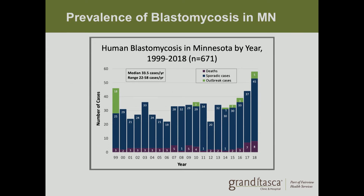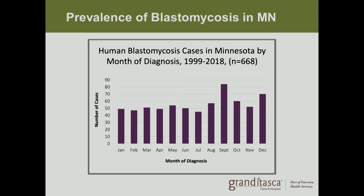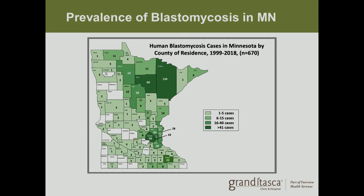As you can see in this graph, the distribution of cases over the last 20 or so years shows cases gradually increasing since 2014. Another graph shows human blastomycosis cases by age, most prevalent in the 41 to 50 age range. A third graph shows blastomycosis is most often reported in September and December, for reasons that will be discussed shortly. The distribution by county shows that St. Louis and Itasca County have the most cases over the last 20 years.